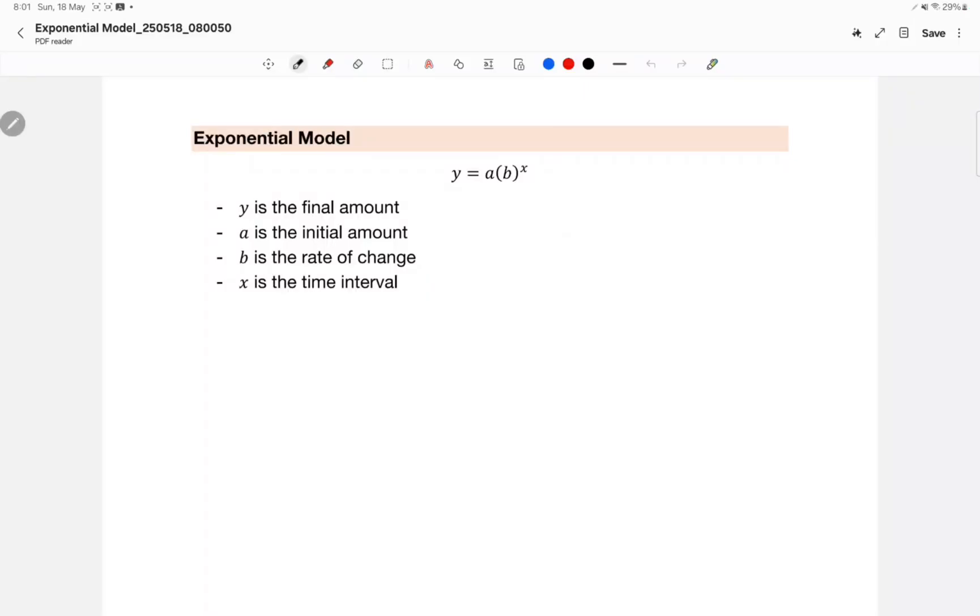The exponential model is a very important part of the SAT. It's given in this form: y is equal to a times b raised to the power of x, where y is the final amount, a is the initial amount, b is the rate of change, and x is the time interval.